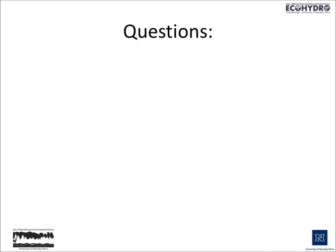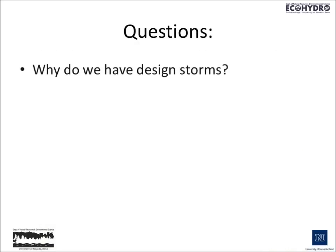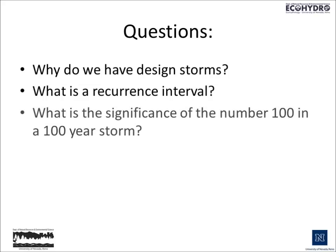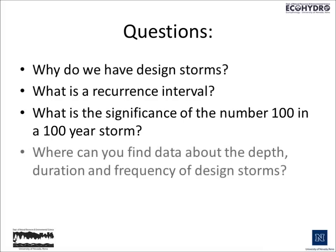So here are some questions. Why do we have design storms? What's a recurrence interval? What's the significance of the number 100 in a 100-year storm? And where can you find data about the depth, duration, and frequency of design storms?